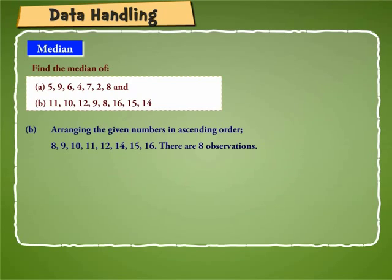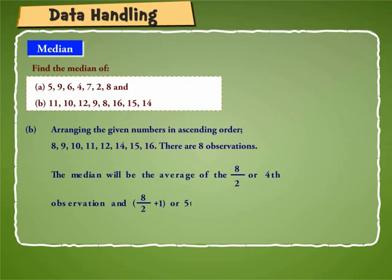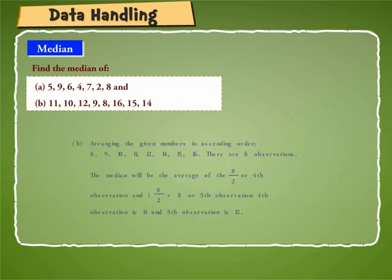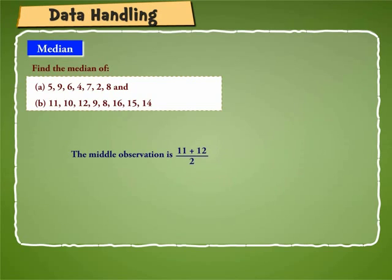There are 8 observations which is even. The median will be the average of the 8 by 2 or 4th observation and 8 by 2 plus 1 or 5th observation. 4th observation is 11 and 5th observation is 12. So median is 11 plus 12 by 2 is equal to 11.5.